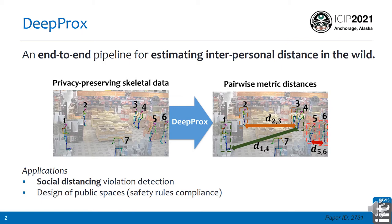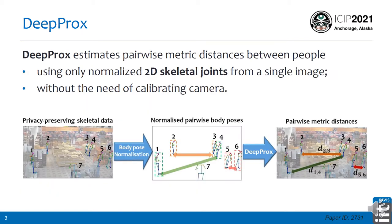In our work we introduce DIPPROX, which is an end-to-end pipeline for estimating interpersonal distances between people in the wild. Applications of DIPPROX range from social distancing violation detection to the design of public spaces for safety rules compliance. DIPPROX estimates pairwise metric distances between pairs of people starting from a single image, using only normalized 2D skeletal joints extracted from an off-the-shelf detector and without the need of calibrating the camera.